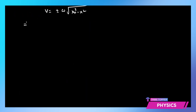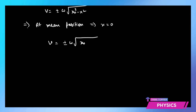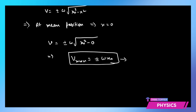This equation gives a very important result. At the mean position, there is no displacement, so x = 0. The velocity becomes v = ±ω√(x₀² − 0) = ±ω x₀, which is the maximum velocity in simple harmonic motion. At the extreme position, x = x₀.